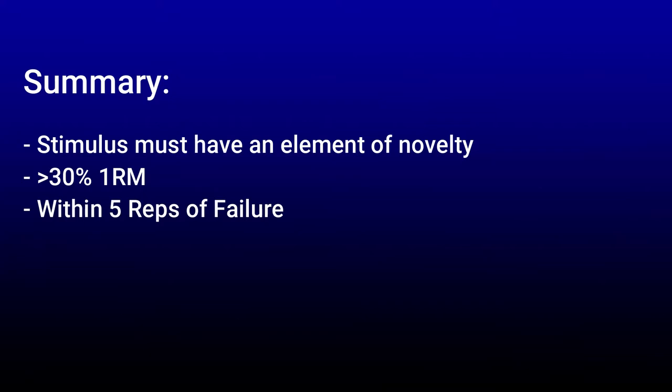The second aspect of overload is that the set should be taken to within five reps of failure. This number is somewhat arbitrary, but we know that the closer you train to failure, the stronger the signal picked up by the receptors. Intuitively, if you could complete 12 reps on an exercise but you stop at less than seven, you probably didn't get a whole lot out of that set. To sum up: a novel overload stimulus is needed to signal muscle growth — novelty meaning you aren't maximally adapted, and the two overload components being 30% or greater of your one-rep max and within five reps of failure. These are the conditions that must be met to see muscle growth.